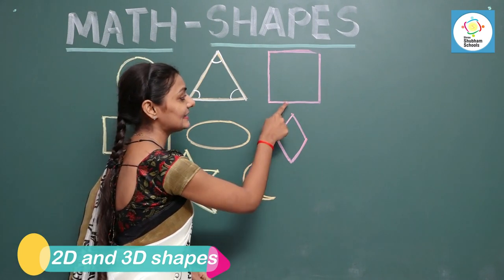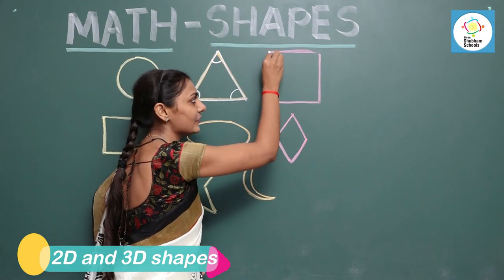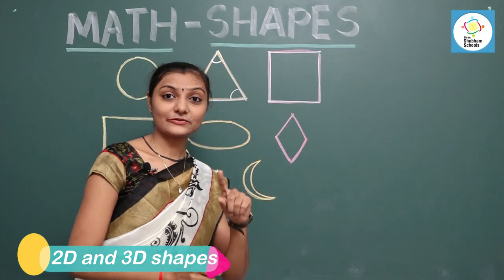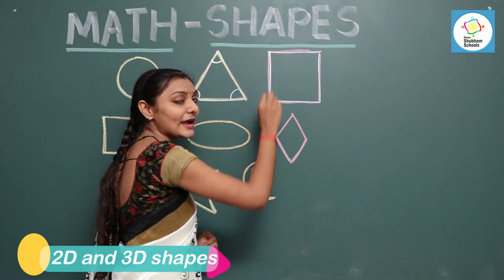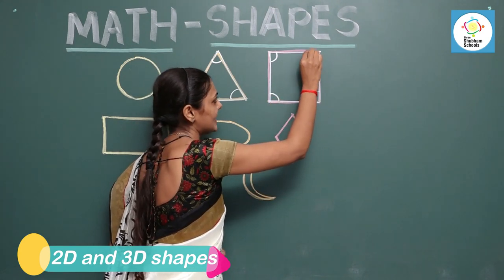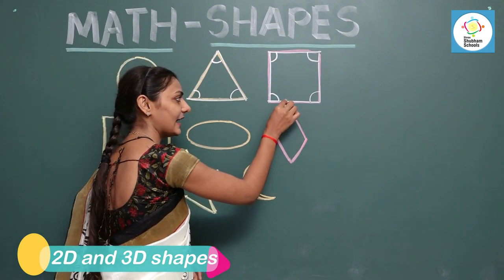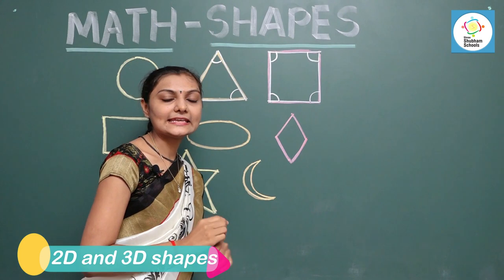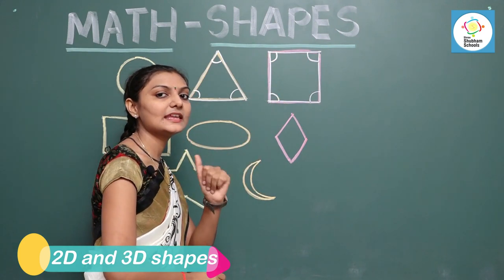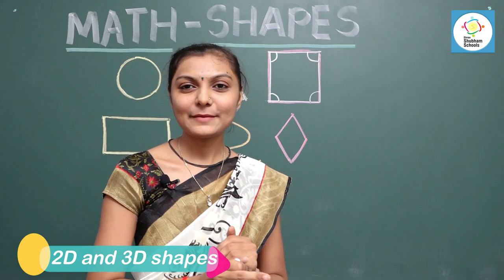This is a square. A square has four sides — one, two, three, and four — as well as four corners. In a square, each side is equal in size. All these sides are equal in size. There are many things which are in the shape of a square.